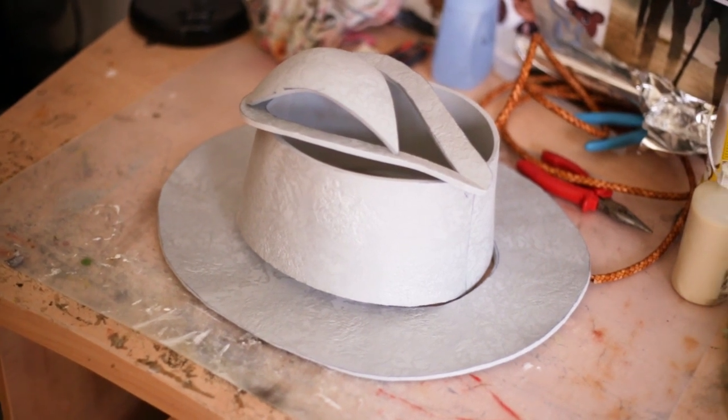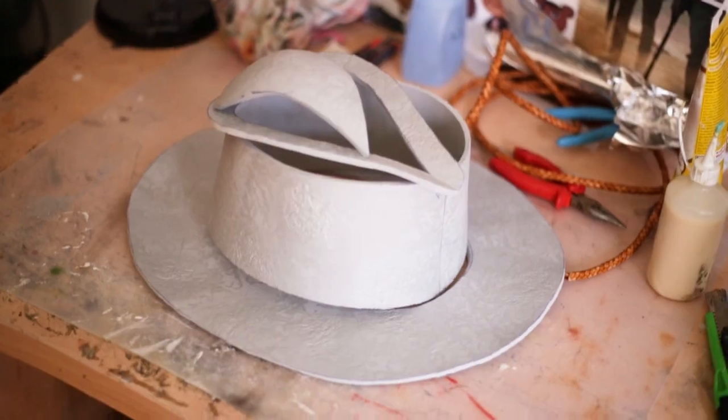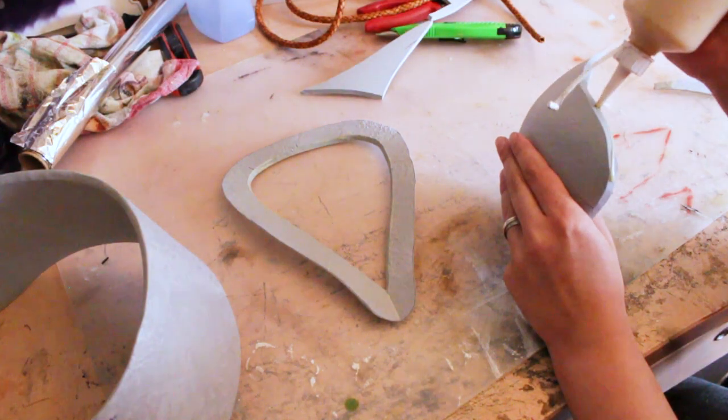And that's what the hat pieces should look like so far. Now we get to sand them a little bit. I use my rotary tool to sand a few bevels into the edges of the crown pieces and glue them together like the pieces before.